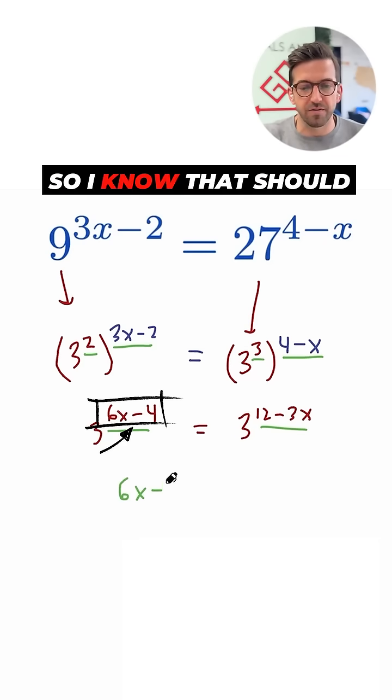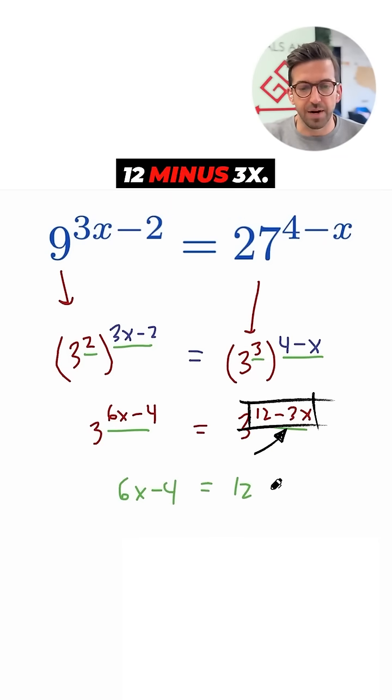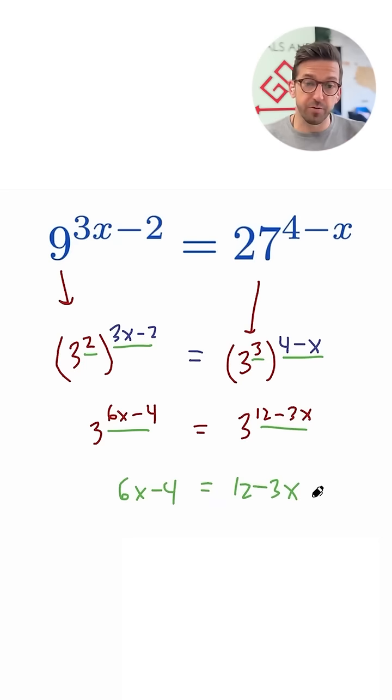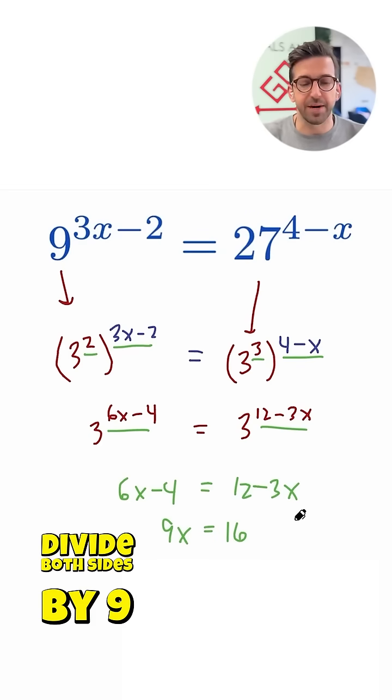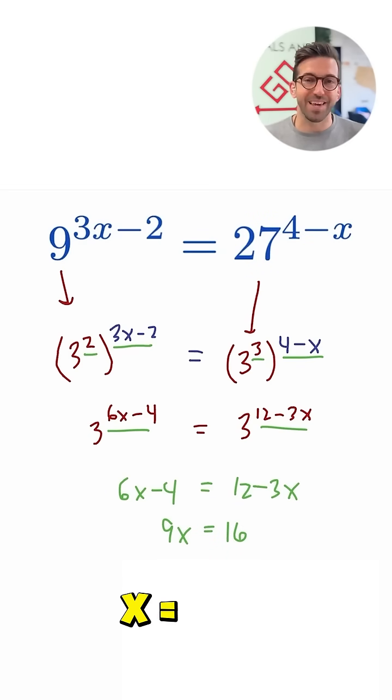So I know that 6x minus 4 should equal 12 minus 3x. Now if I do some rearranging, I'll add the 3x over here, I'll add the 4 over here. I've got 9x is equal to 16, and therefore when I divide both sides by 9, I find that my answer is x equals 16 ninths, which means our answer here is d.